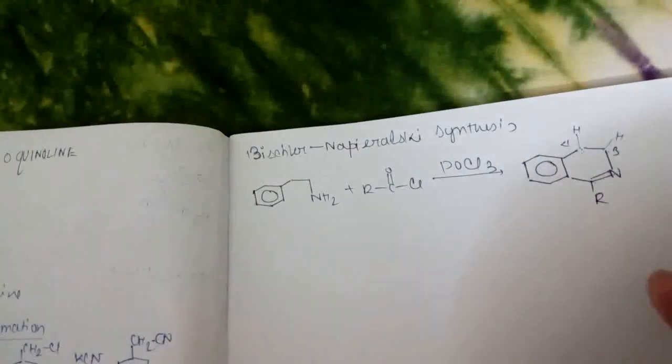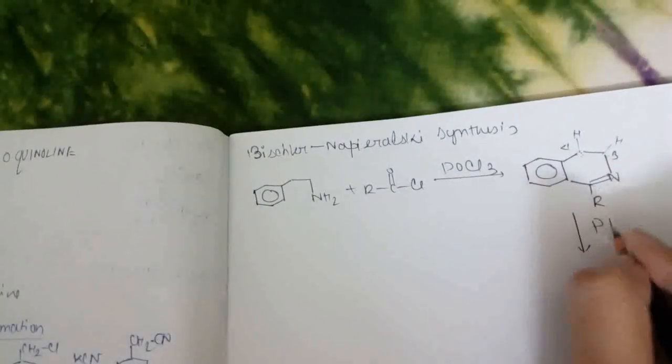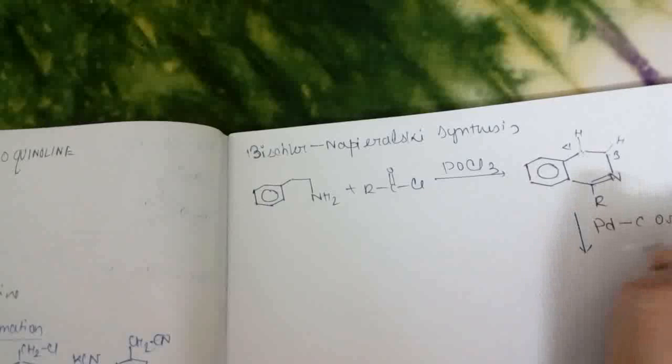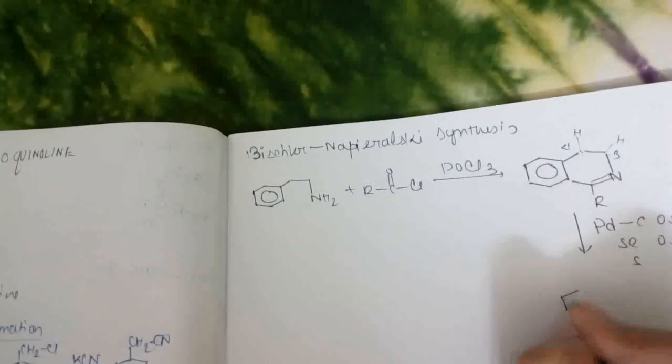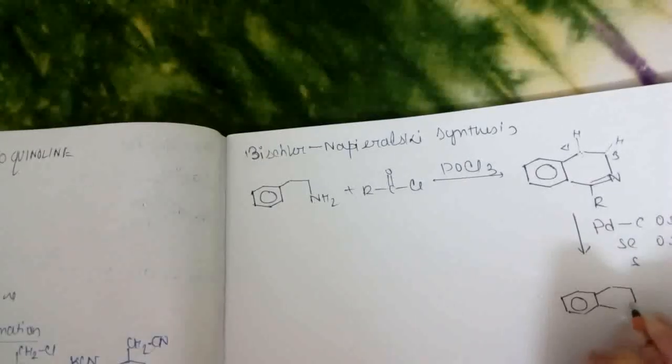Now to aromatize this, we will use palladium carbon or selenium or sulfur. Then our required product isoquinoline will form.